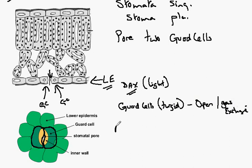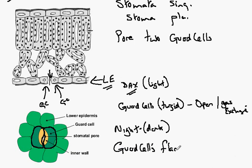At night, in the dark, the guard cells are flaccid. They have lost water and the pore closes and stops gas exchange.